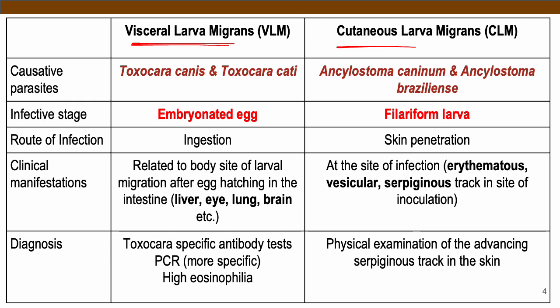Visceral larva migrans is caused by the Toxocara species — Toxocara canis and Toxocara cati. While cutaneous larva migrans (CLM) is caused by the zoonotic hookworms: Ancylostoma caninum and Ancylostoma braziliense.